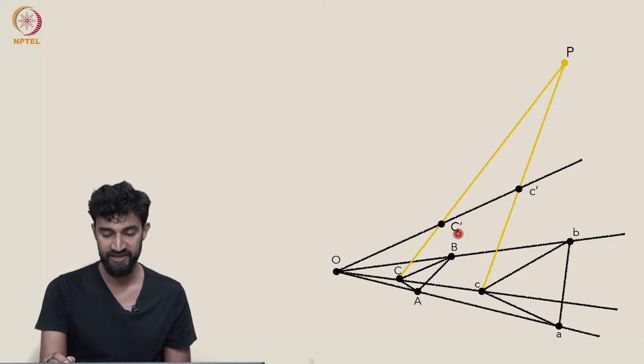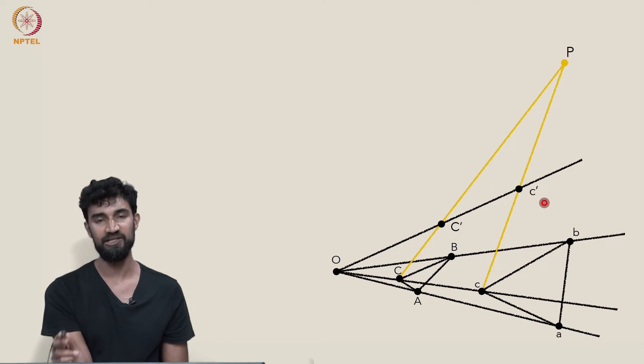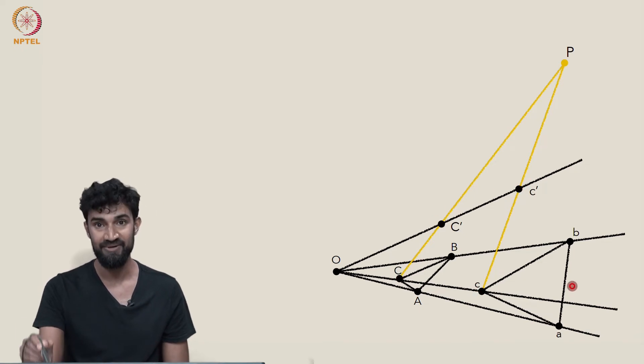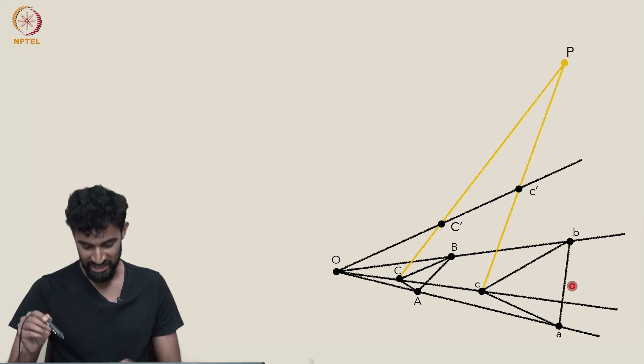So we had a lot of freedom in choosing our capital C prime. We don't have any freedom in choosing our little c prime. But, now that we've lifted these points, little C and capital C to little c prime and capital C prime, now we can lift our triangles.